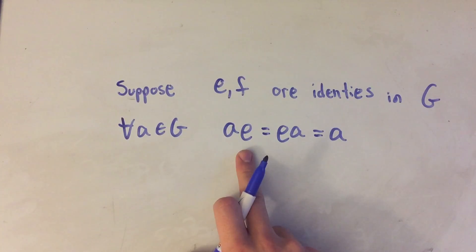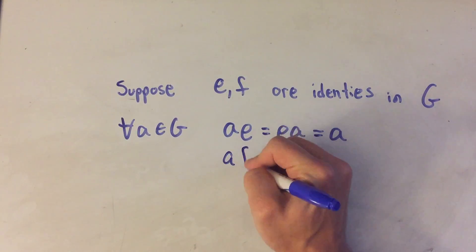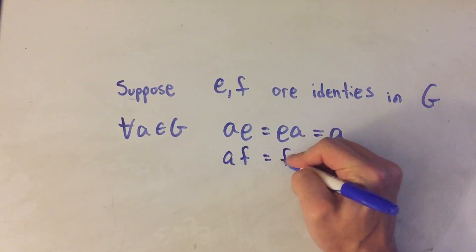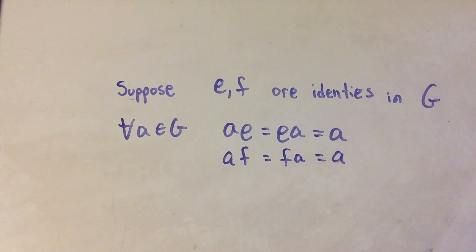So imagine if you had the number 5 and the identity 1, right? 5 times 1 is 5, 1 times 5 is 5, so that's the effect the identity has on the element. Well that would also mean if F is an identity then A times F is F times A is also A. So if these are both identities then they would have the same effect on A.